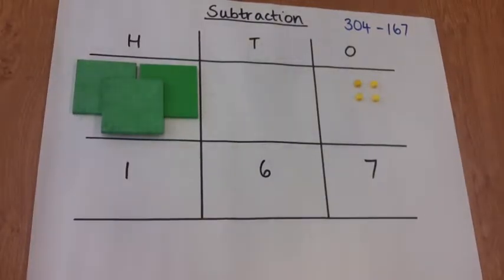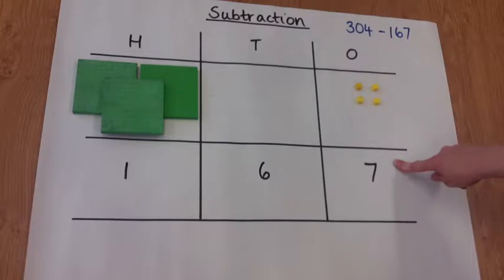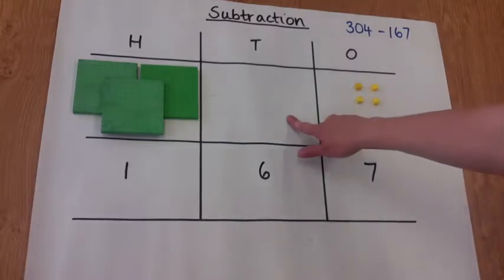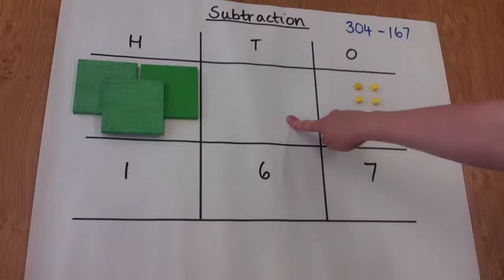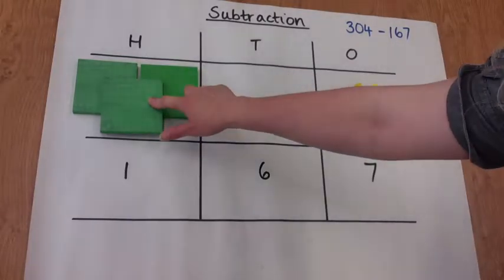Really important to remind the children to start in the ones column. We're going to try and take seven ones away, which we can't do. There's not enough to take them away. So we need to regroup from the tens column. Oh dear, nothing in there either.